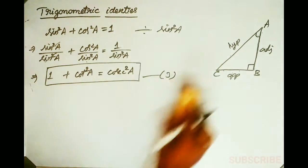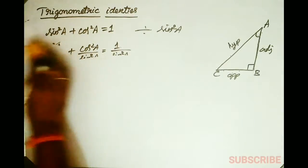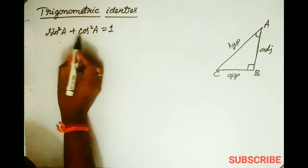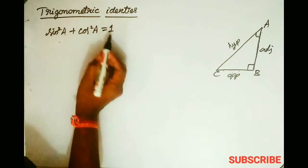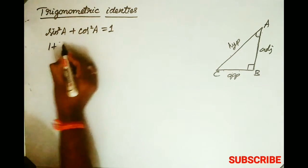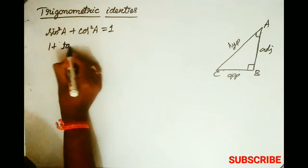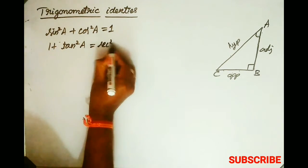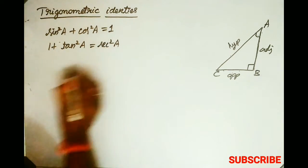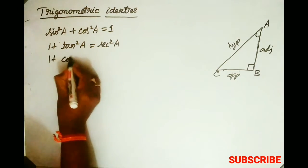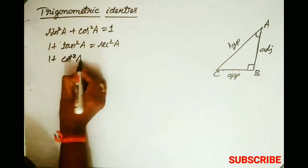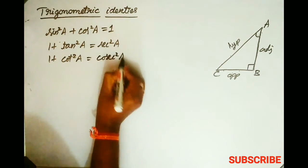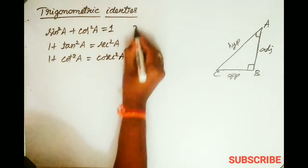So there are three trigonometric identities. The first one is sin²A + cos²A = 1. The second one is 1 + tan²A = sec²A. The third one is 1 + cot²A = cosec²A. These are the three trigonometric identities.